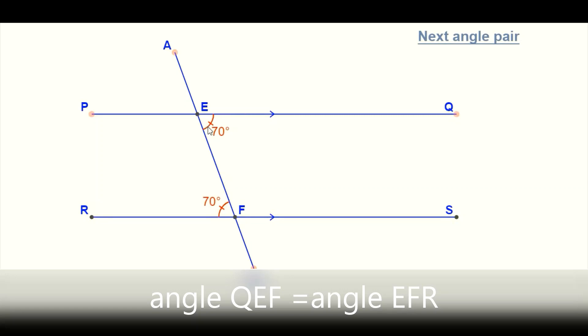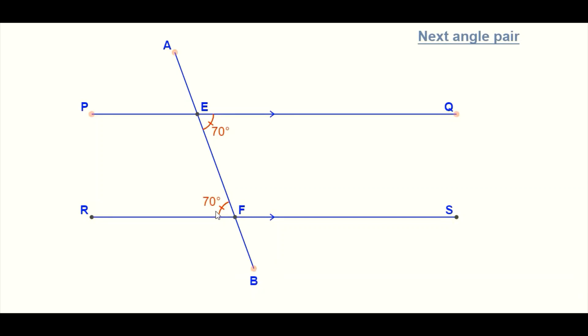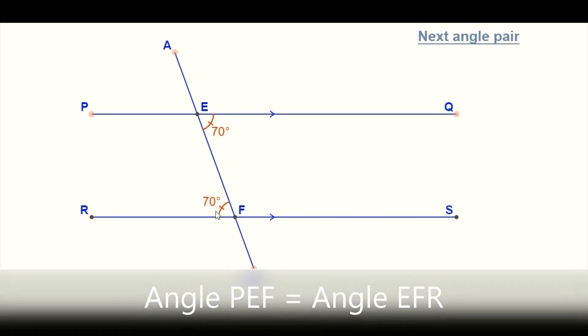And one thing that you can note about these two angles, they are equal. So in other words, we're saying that alternate angles are always equal.